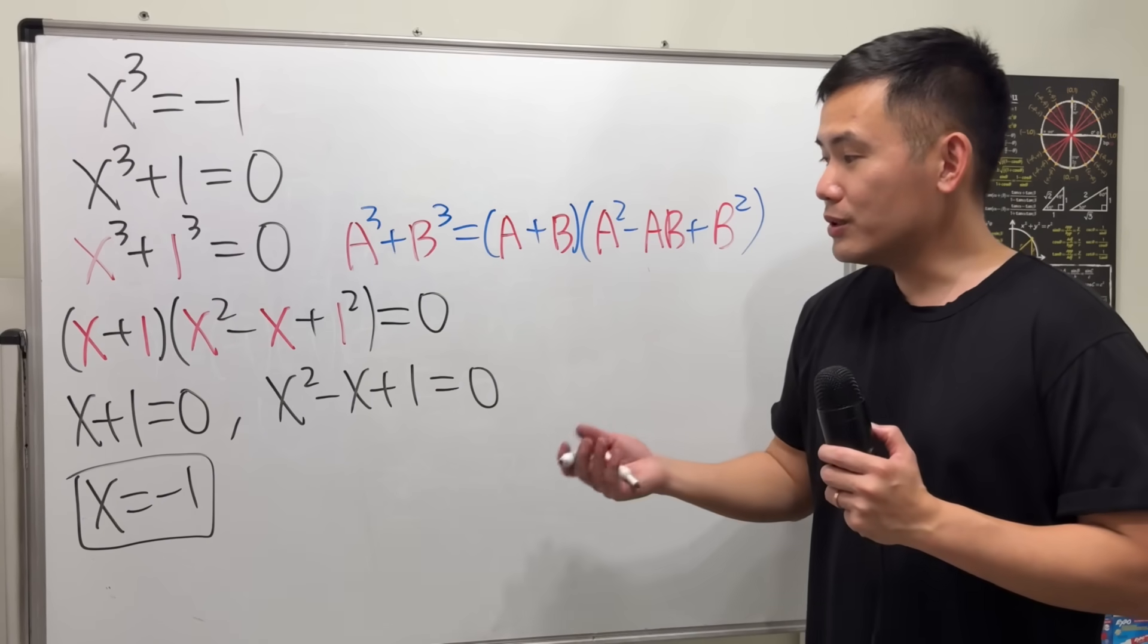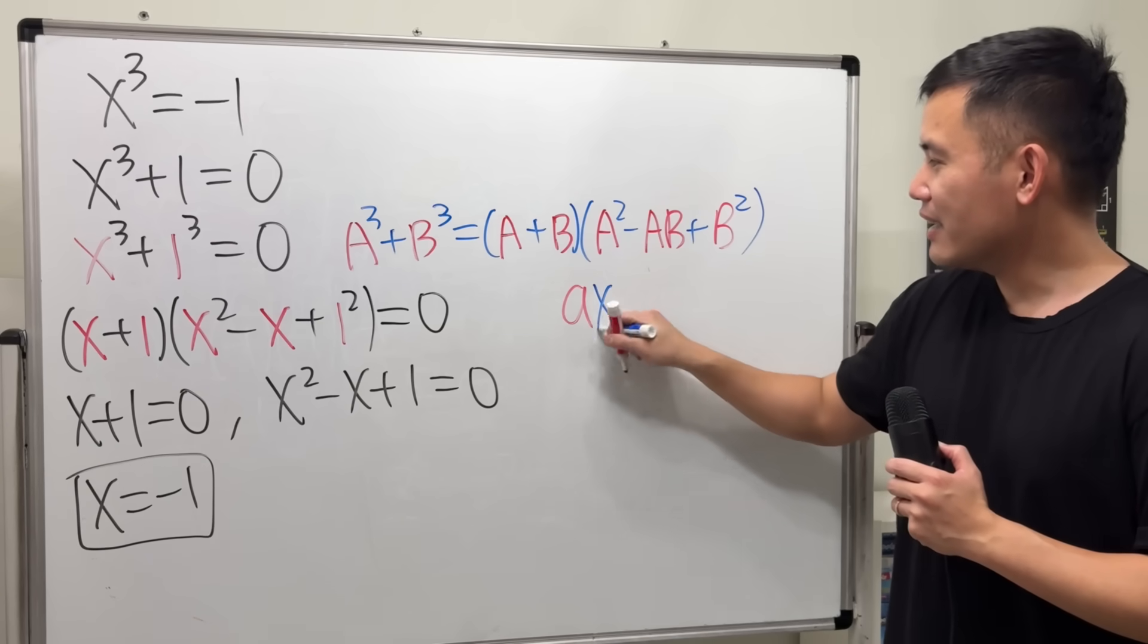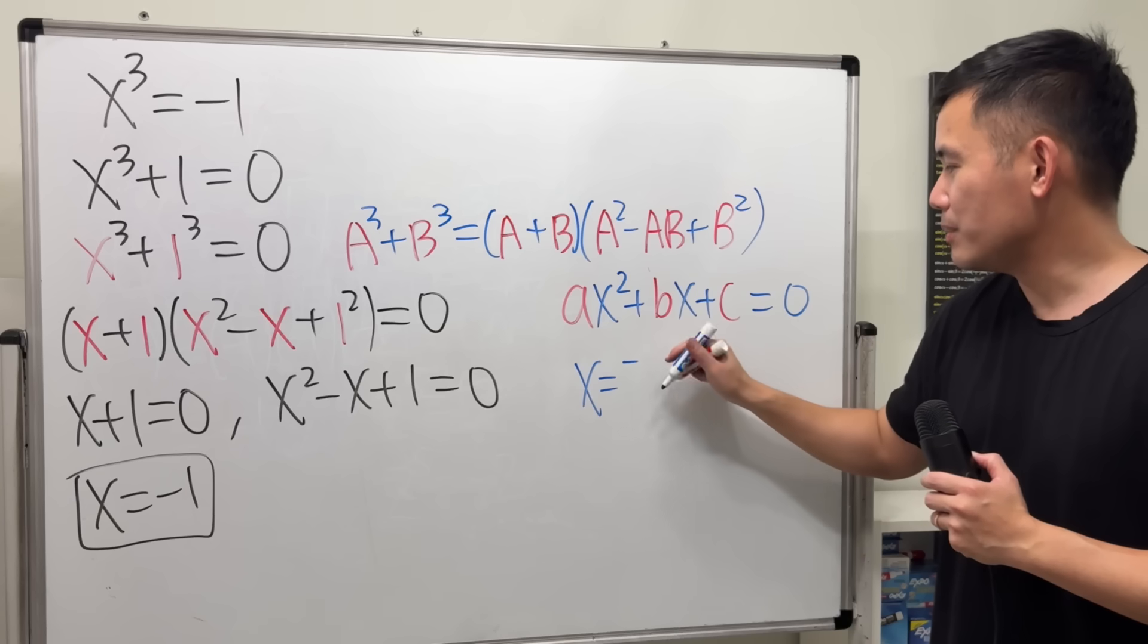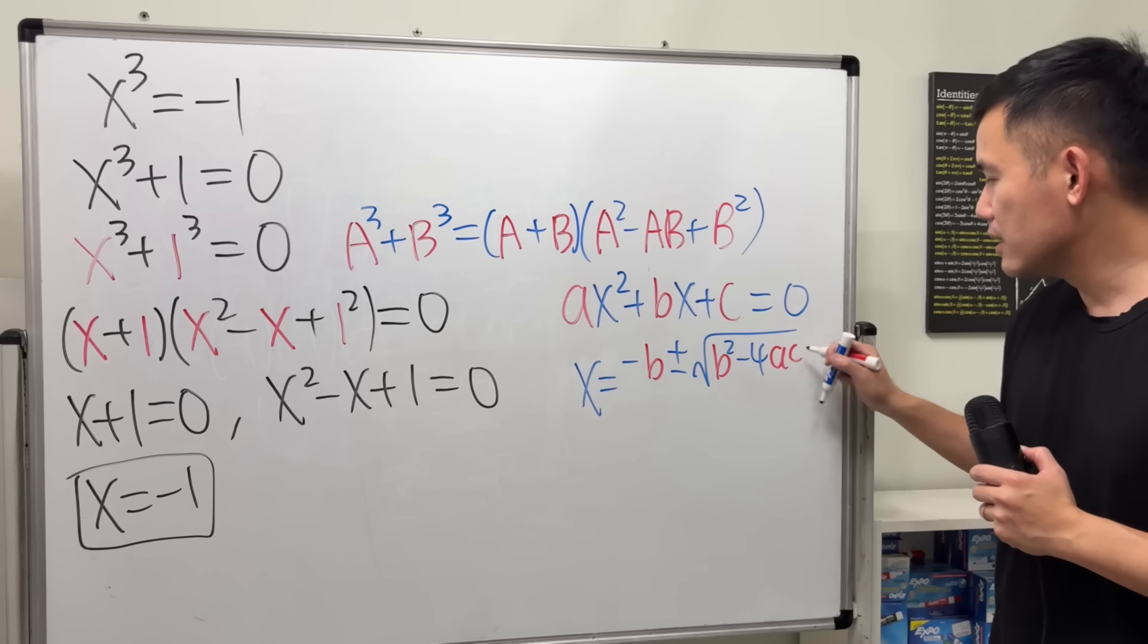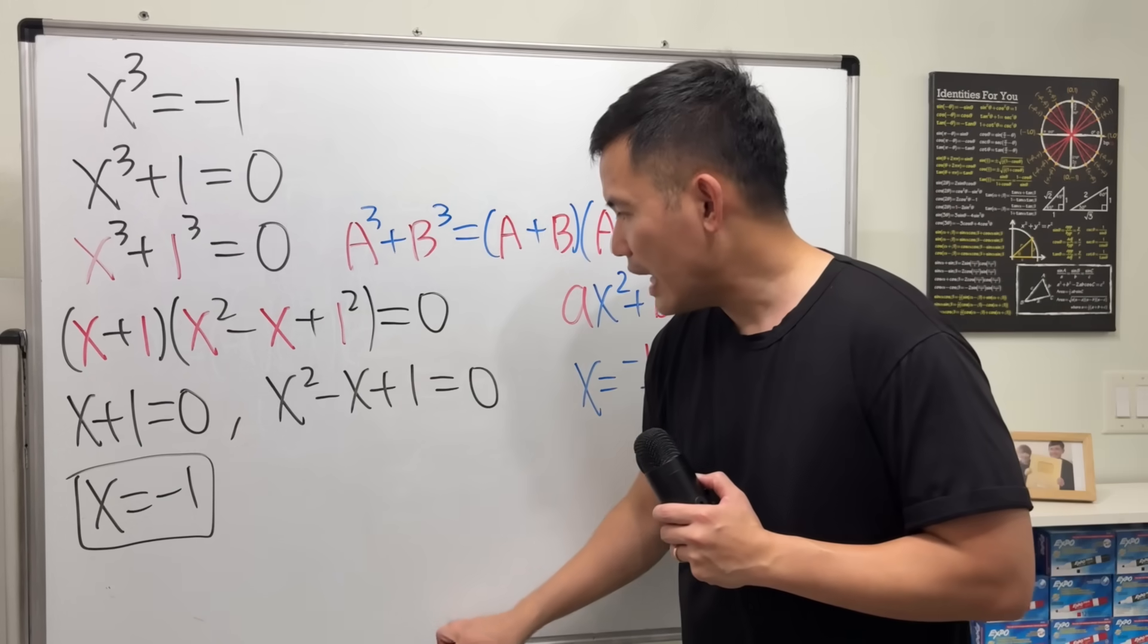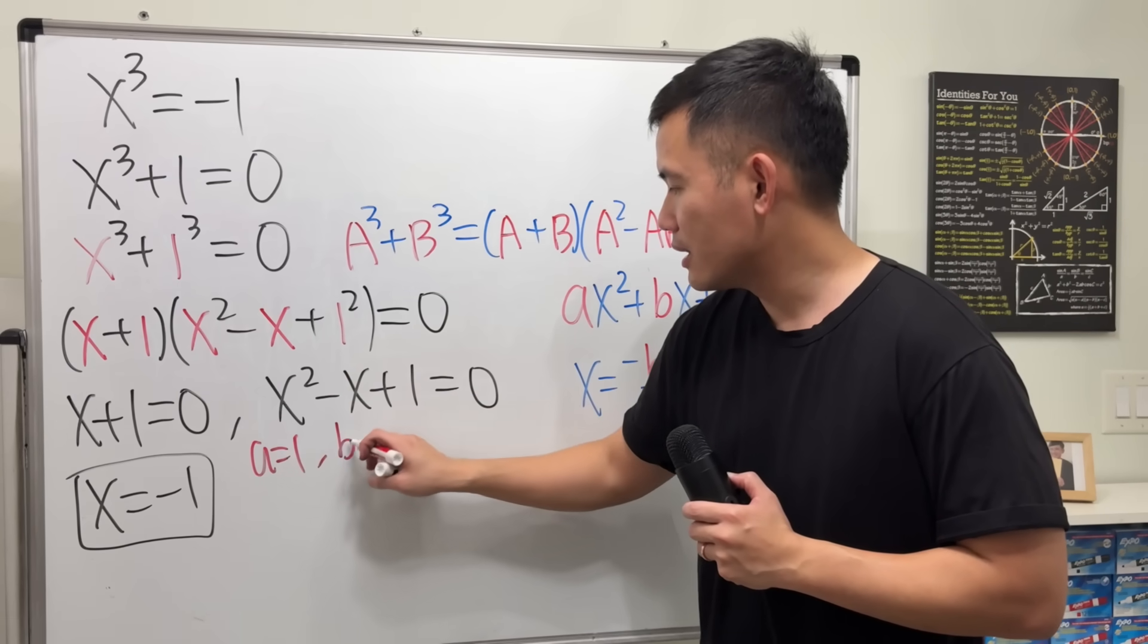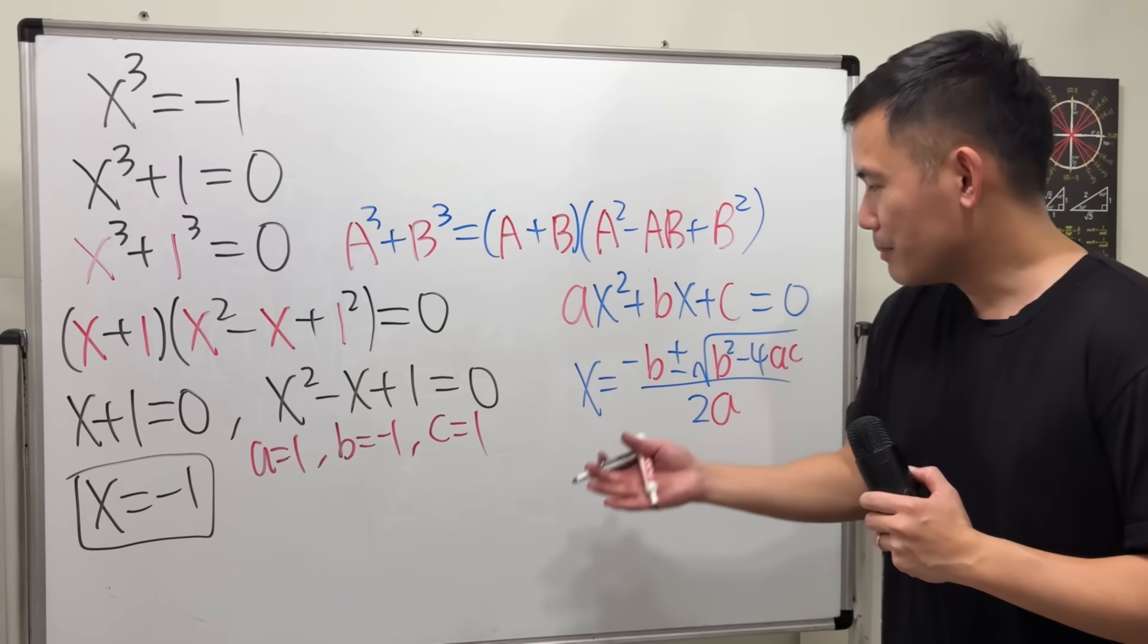Now, for this right here, we can use the quadratic formula. And I'm also going to remind you guys, on the side, if we have ax squared plus bx plus c is equal to 0, then x is equal to negative b plus or minus square root of b squared minus 4ac all over 2a. Here, a is 1, even though we don't see it, but it's 1. b is technically negative 1, and then c is this 1. And then applying the formula...